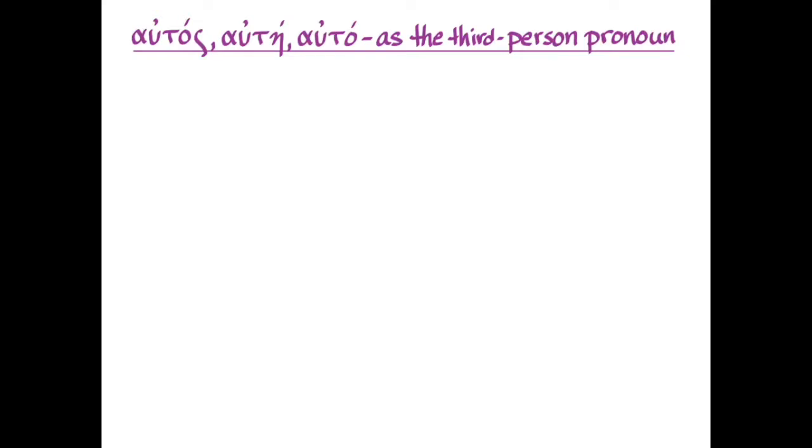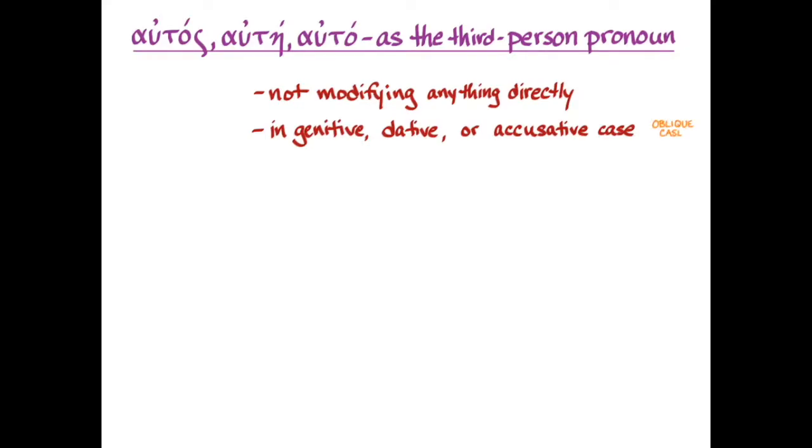So a few things to know. When you see this word in a sentence that isn't modifying anything else directly, in other words, it doesn't agree with anything in case number and gender, but it is standing on its own and it's in the genitive, the dative, or the accusative case. This won't happen in the nominative case, but on its own in the genitive, dative, or accusative case. By the way, these are the cases that are called in the jargon of classic scholarly grammar, these are called the oblique cases.